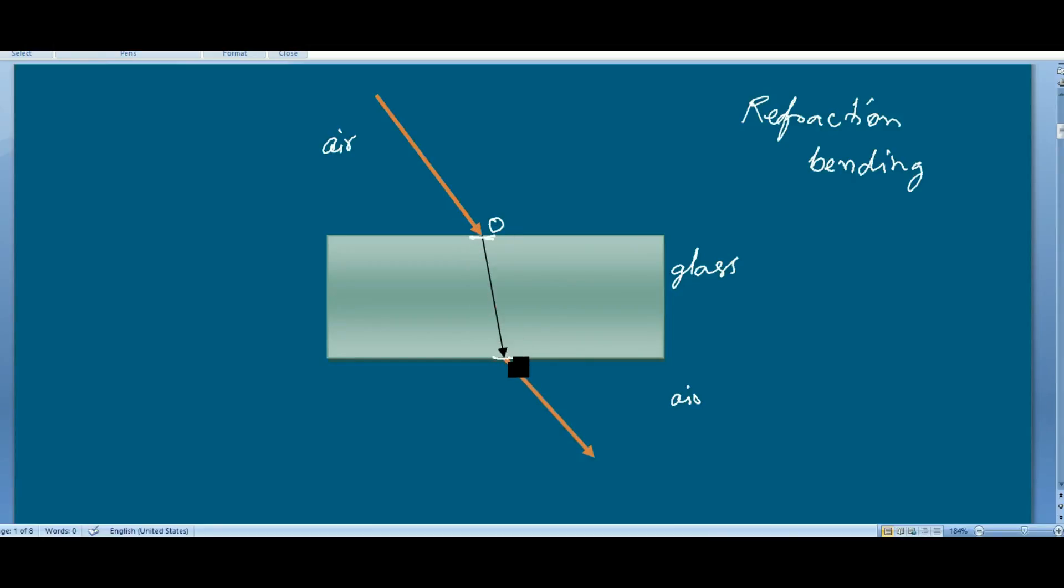So what is the definition of refraction of light? The change in the direction of light when it passes from one medium to another medium obliquely is called the refraction of light.